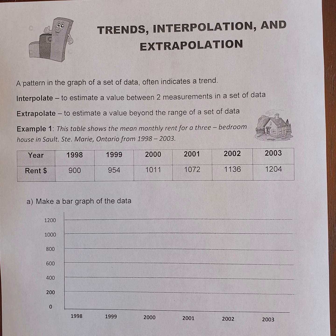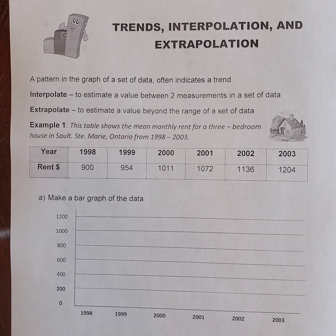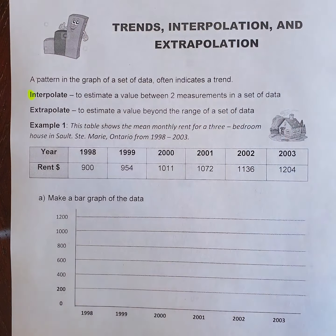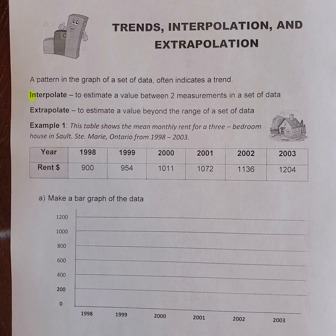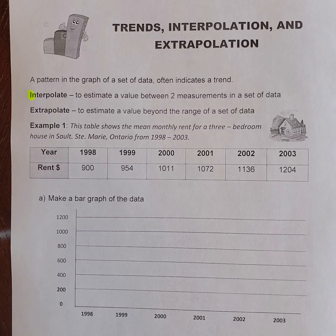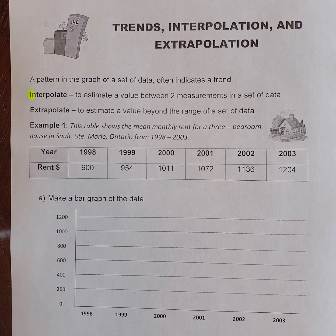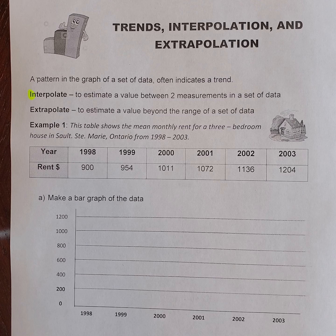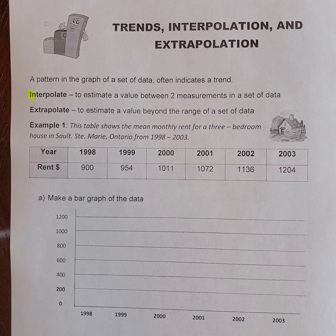So interpolation — if you look at the word 'interpolate' you see the word 'in' — it is used to get a midpoint value between two sets of data. So let's say for example you have data from 2005 and 2007 but you don't have 2006. Interpolation would be what you use to estimate that middle point between two measurements.